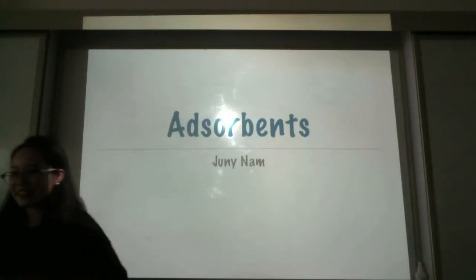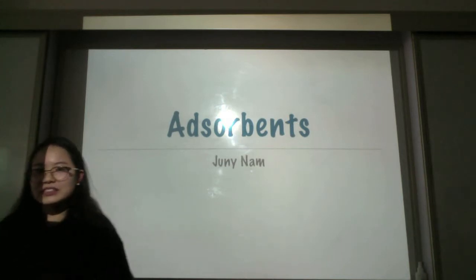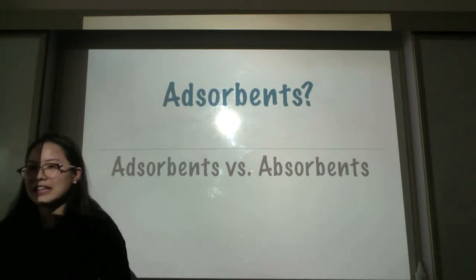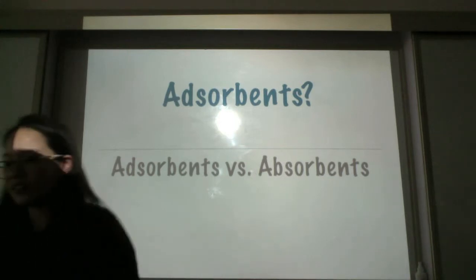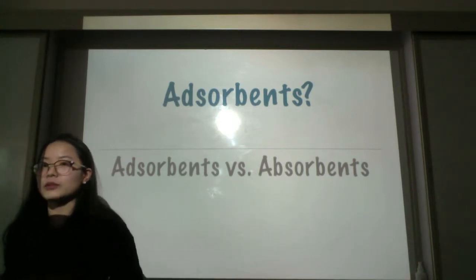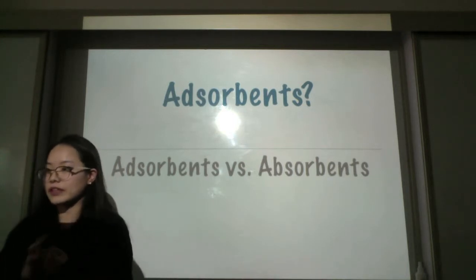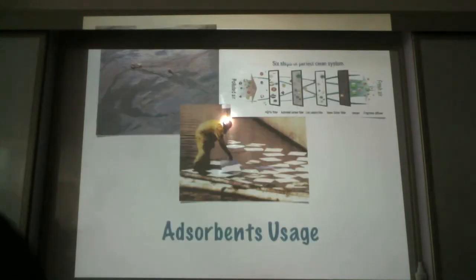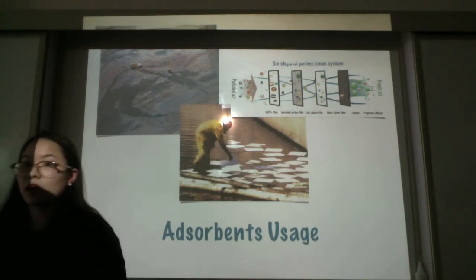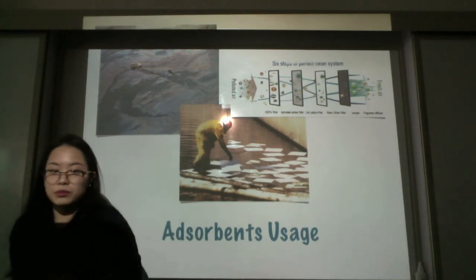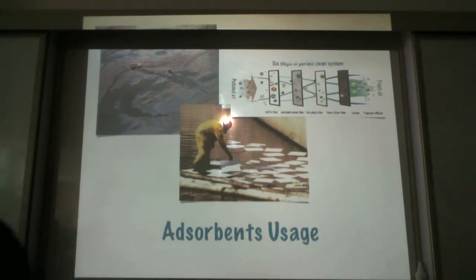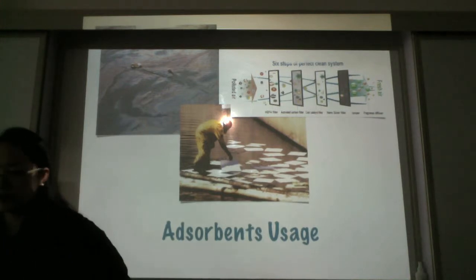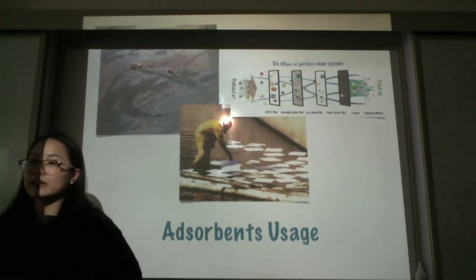Today I'm going to be talking about adsorbents, and I did two related labs on this. There's a slight difference between adsorbents and absorbents: adsorbents are surface-based and absorbents are volume-based. Adsorbents adhere to the surface of a material, while absorbents absorb into the whole volume. Adsorbents are used in many places — like activated carbon, which is used for wastewater purification, air filtration, and even oil spills. The type of bonding can involve van der Waals, nonpolar, polar electrostatic forces, or even covalent bonds.